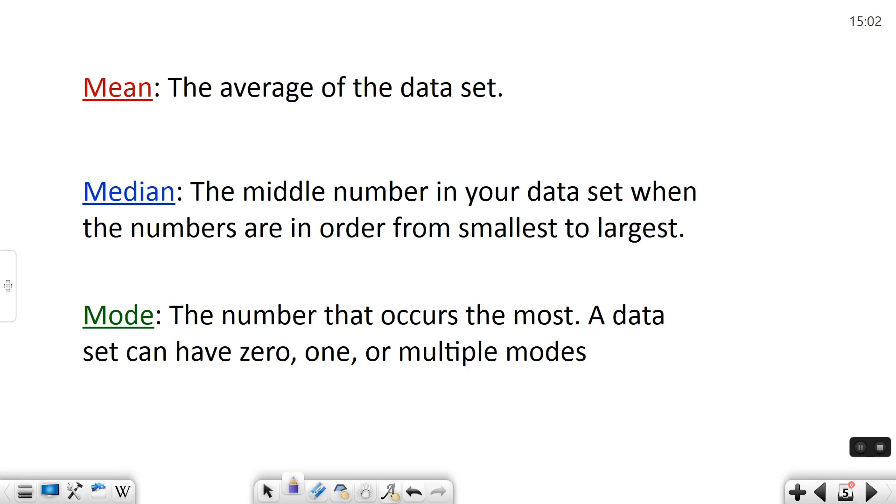The median is the number that's in the middle of your data set once they're arranged from least to greatest. It's very important that they are from least to greatest or else your median might be a different number than what it should be. If there happens to be two middle numbers you just take the average of those two.